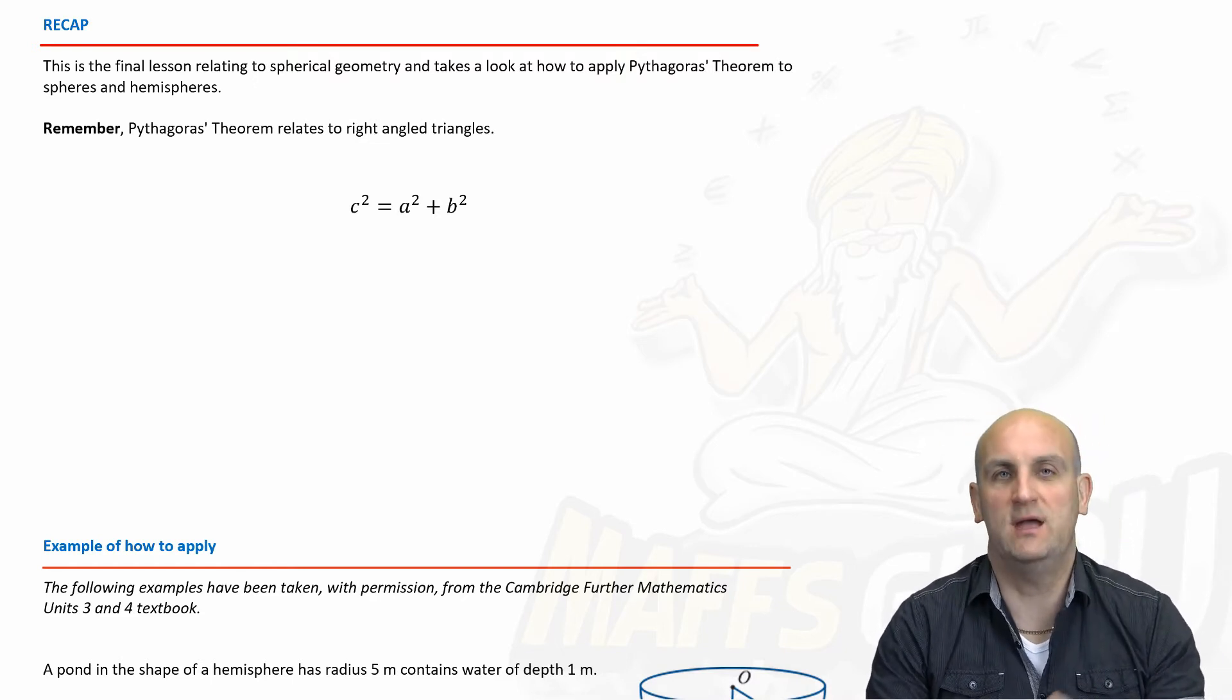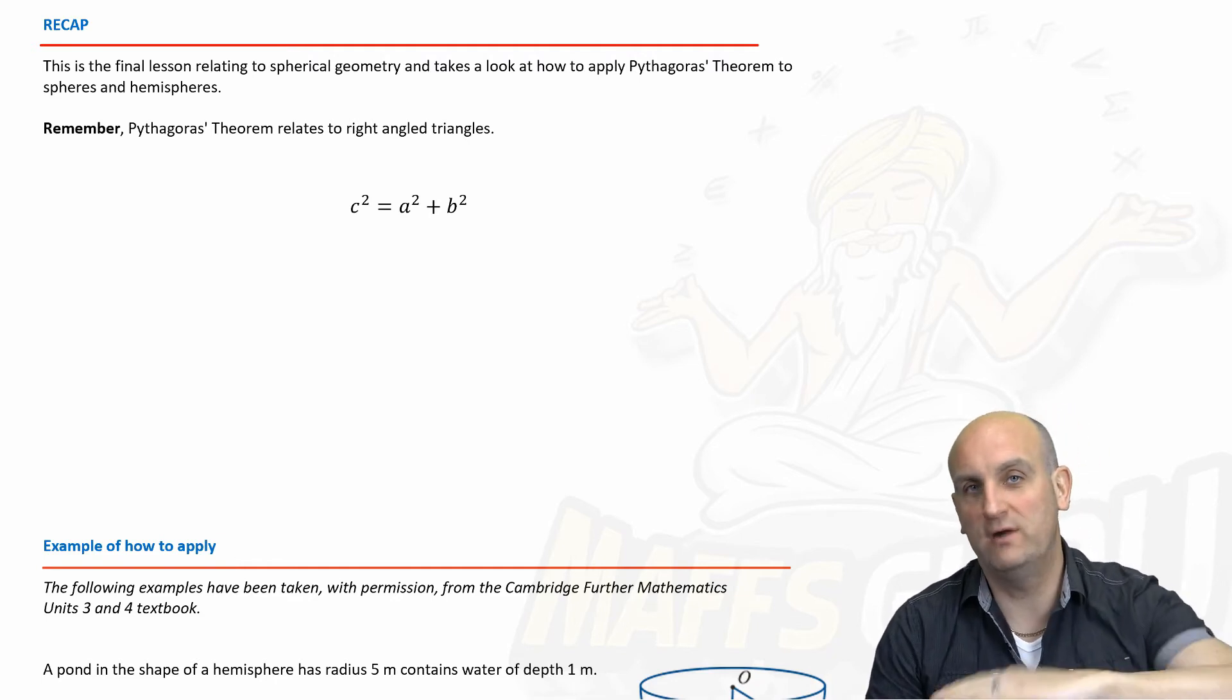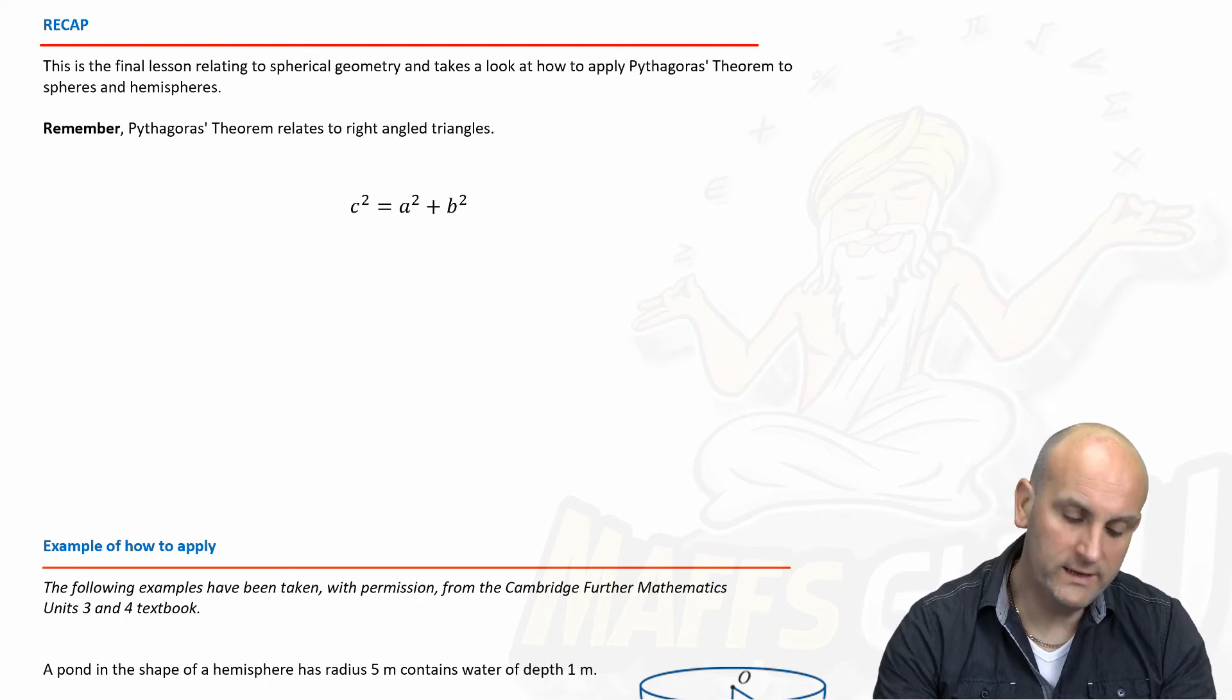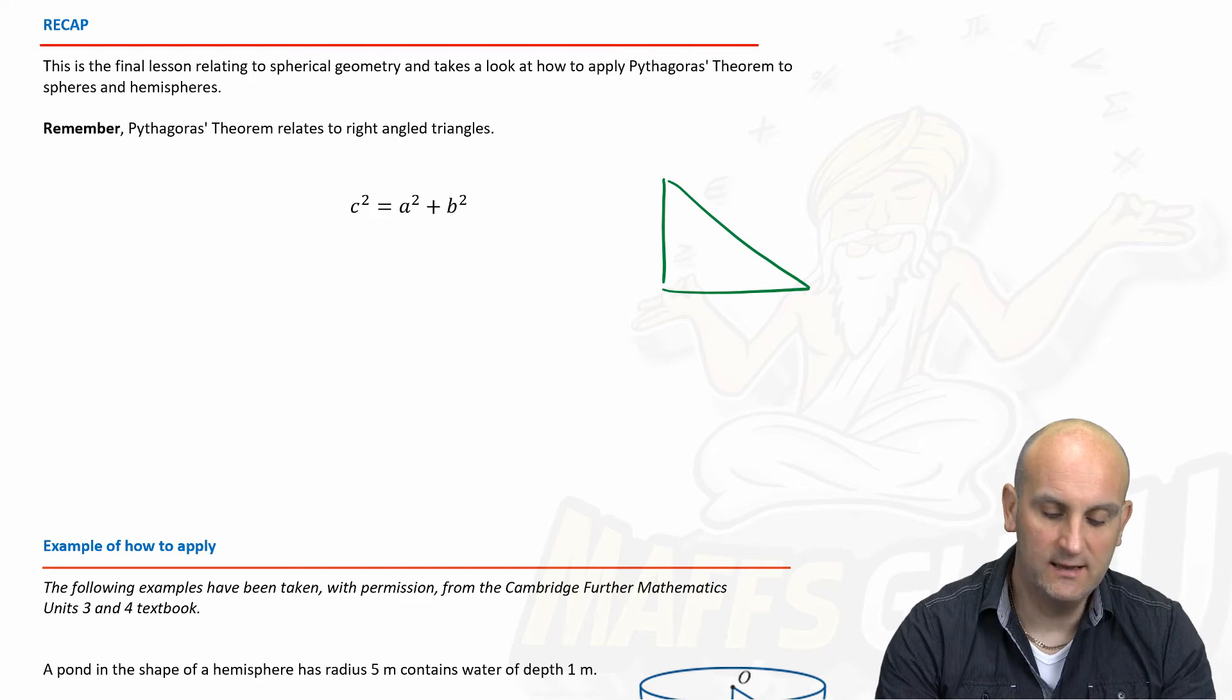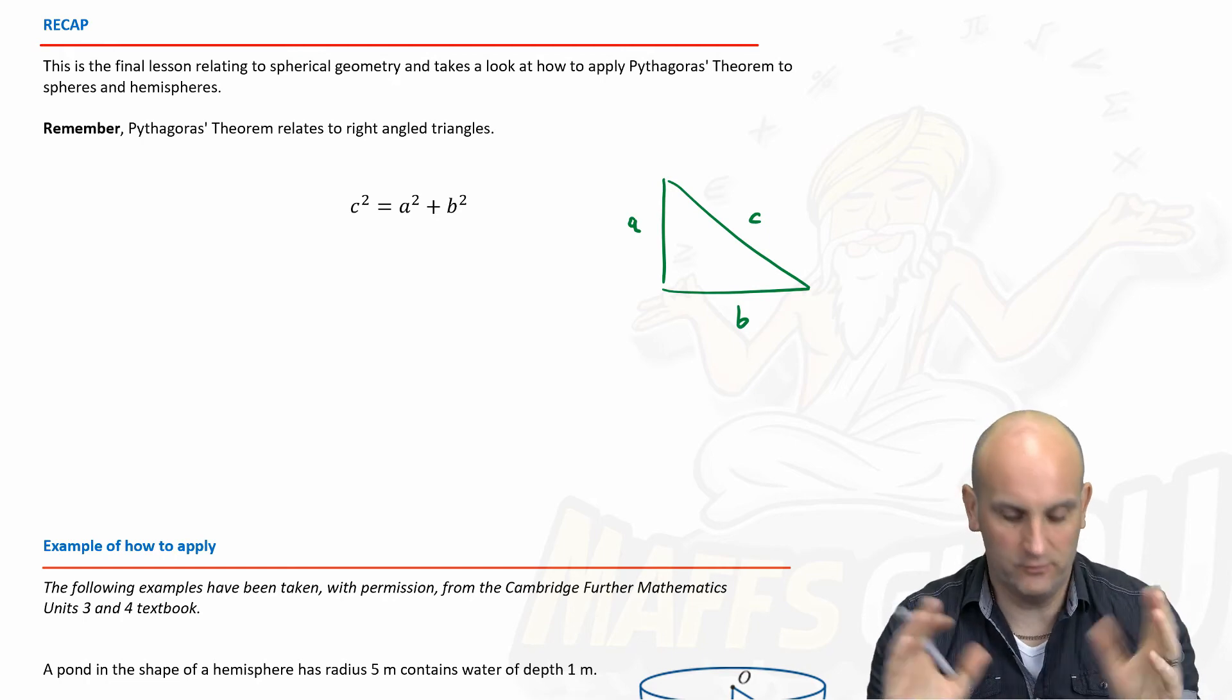Now whether we're dealing with spheres or hemispheres, we've already had an example of this previously where we had to find the radius of a small circle as opposed to the radius of a great circle. We just need to make sure that when we have a triangle we label that c² is always the length of the longest side and once we know that we can find other side lengths.